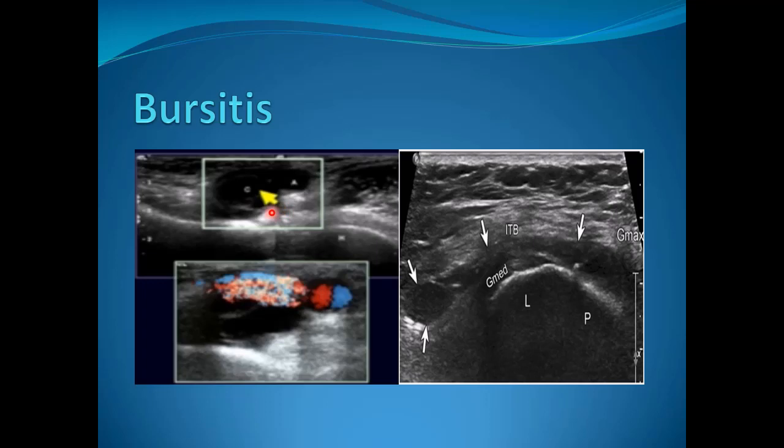This is an example of the region of the common femoral artery and vein with a cystic region surrounding them. By color Doppler, we can differentiate the vessels from the bursitis, which is located lateral to the vessels.